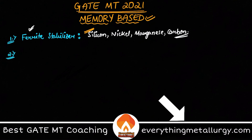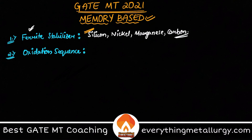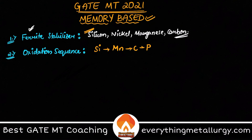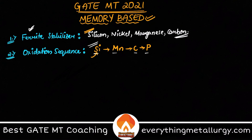The next question asks about the oxidation sequence in steelmaking, which we've discussed in many previous videos. The sequence is: silicon, manganese, carbon, and phosphorus. From the Ellingham diagram you can easily derive this. Silicon is the first element to get oxidized, so the answer is silicon. From the given options you can easily identify it.